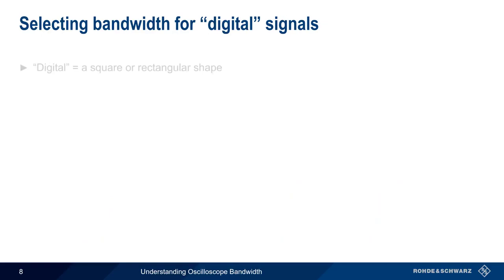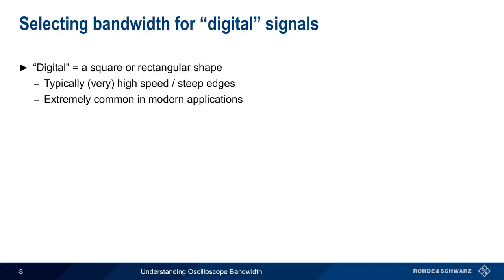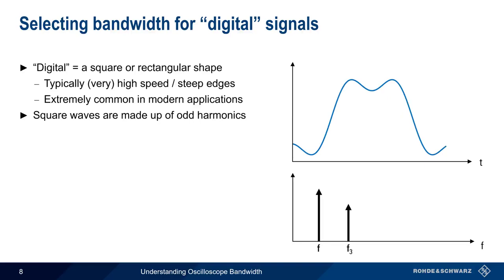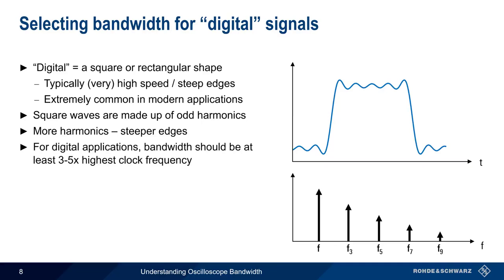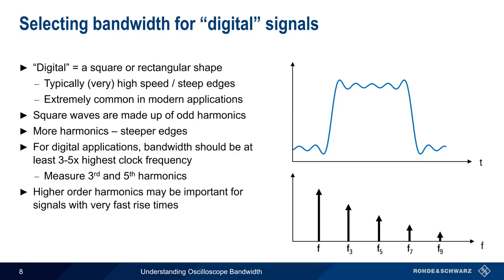Let's contrast this with digital signals. When we talk about digital signals, we usually mean not just signals with a square or rectangular shape, but also signals that are high speed and/or have sharp edges. These are extremely common in modern digital applications, and therefore it's important that we be able to measure them accurately. As you should already know, square wave signals are made up of the sum of odd harmonics, and the edges of our square wave become sharper or steeper as the number of odd harmonics increases. This is why we saw rounding of corners and decreased rise time when our bandwidth is lowered — the higher order harmonics needed to make the steep edges and sharp corners were falling outside of our scope's bandwidth, and their amplitudes were not being correctly measured. For digital applications, we normally want to choose a scope that has a bandwidth of three to five times the highest clock frequency, ensuring that we are accurately measuring the third and fifth harmonics. In most cases, this is sufficient for digital applications, although even higher order odd harmonics, like seventh and ninth, might be important for signals with very fast rise times.